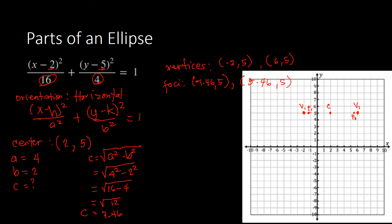Next, we identify the co-vertices. Co-vertices use the value of b, so we count 2 units up and 2 units down from the center. Up: 1, 2 — that's one co-vertex. Down: 1, 2 — that's the other co-vertex. Now we draw our ellipse. Let's just assume this is a perfect ellipse. This is how our ellipse looks.